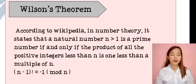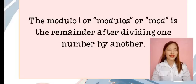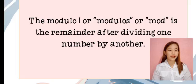So now, what is Wilson's Theorem? According to Wikipedia, in number theory, it states that a natural number n greater than 1 is a prime number if and only if the product of all the positive integers less than n is 1 less than a multiple of n, or read as n minus 1 factorial is equal to negative 1 mod n. In addition, the modulo or modulus or mod is the remainder after dividing one number by another.